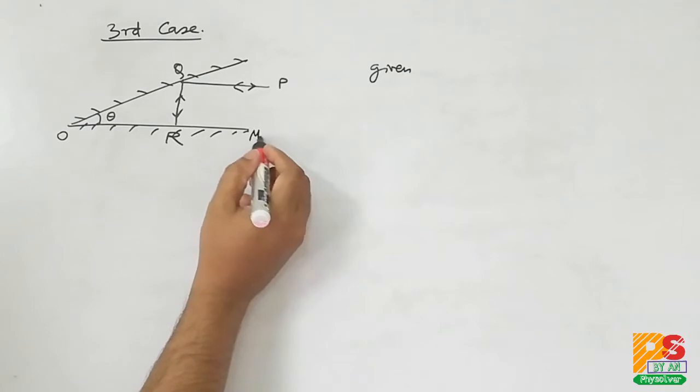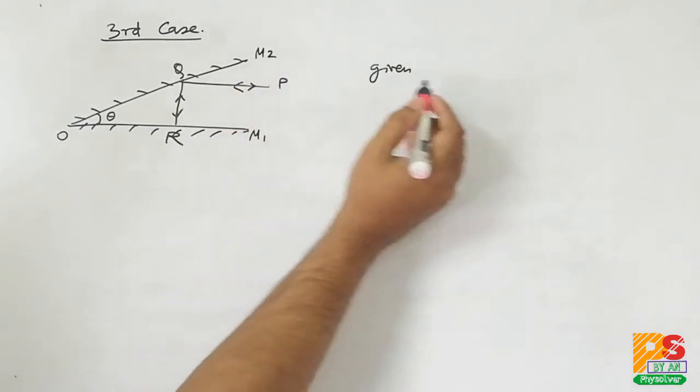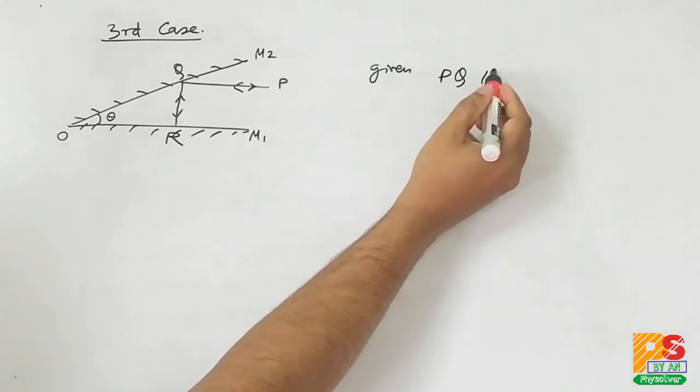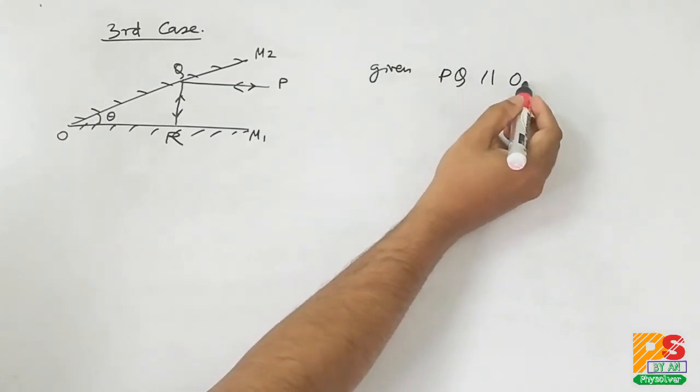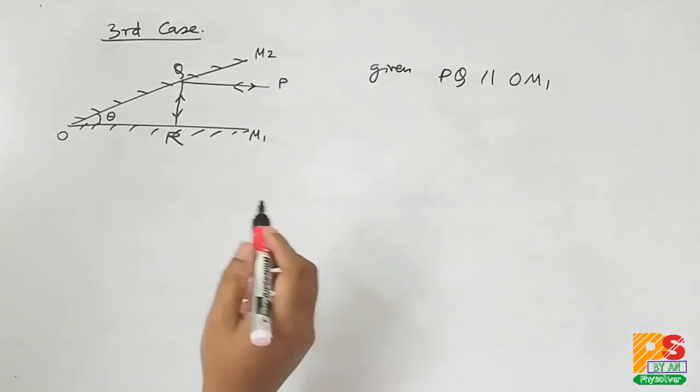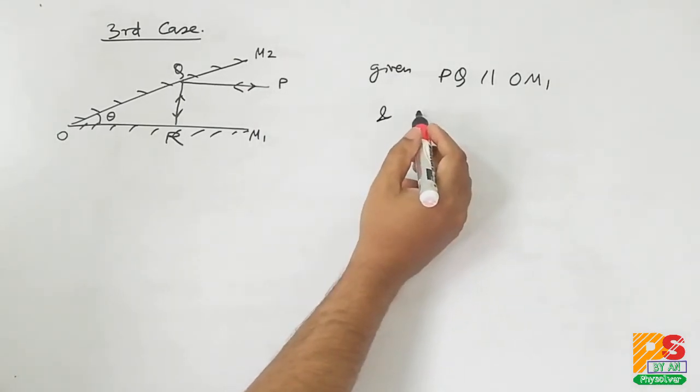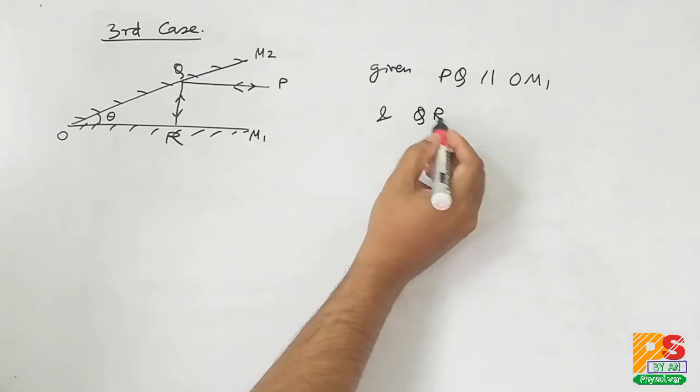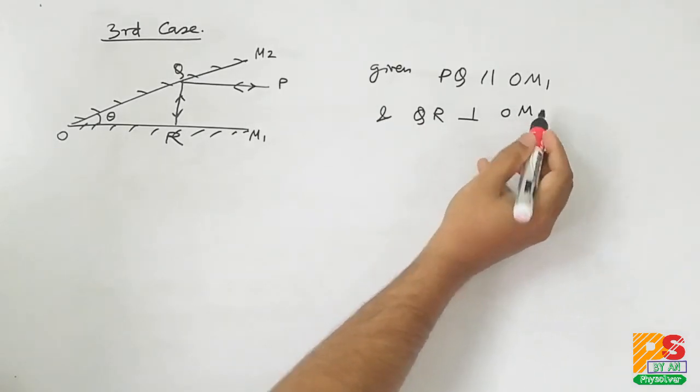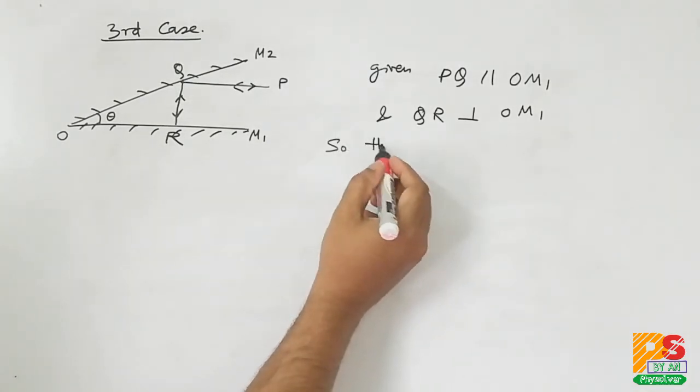Let's name the mirrors OM1 and OM2. Given PQ parallel to OM1 and QR is perpendicular to OM1. So the ray retraces back in its path. We have to find theta.